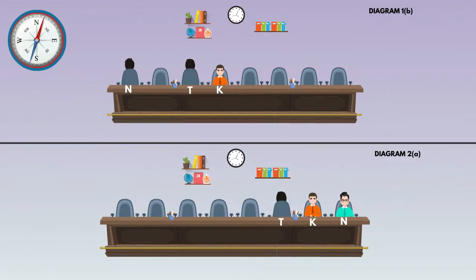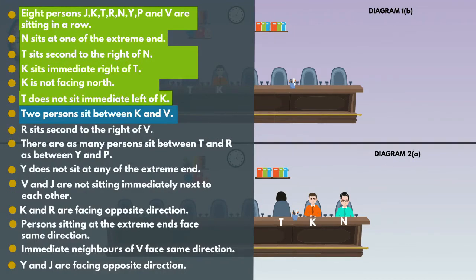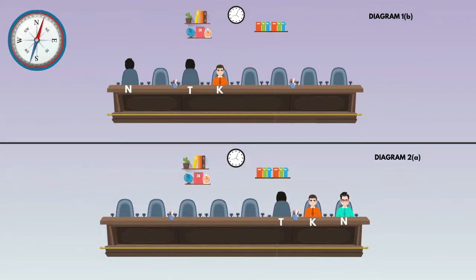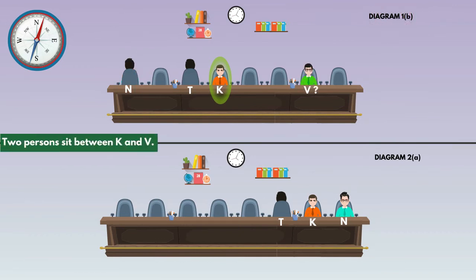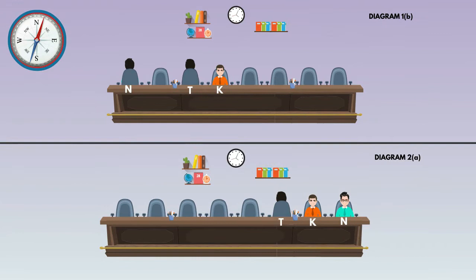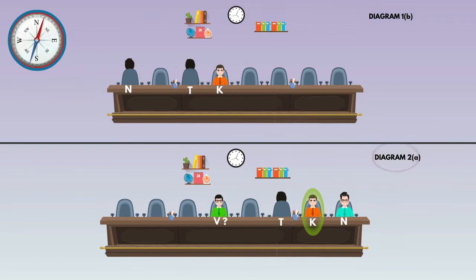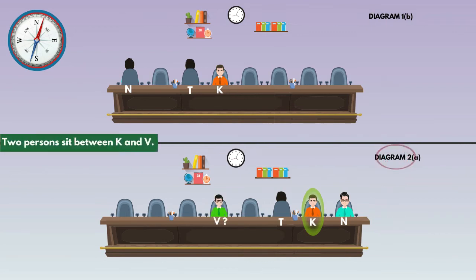Go to the next statement: 2 persons sit between K and V. In diagram 1B, K sits here, so we can place V here or here, but we can't place V at the position already filled with N, so place V at the valid position only. In diagram 2A, K sits here, so place V at the position where 2 persons sit between K and V.